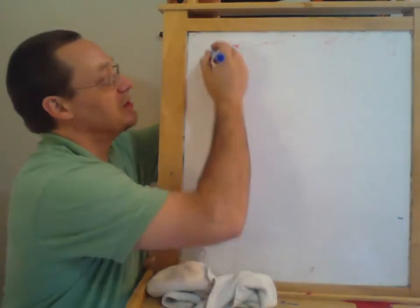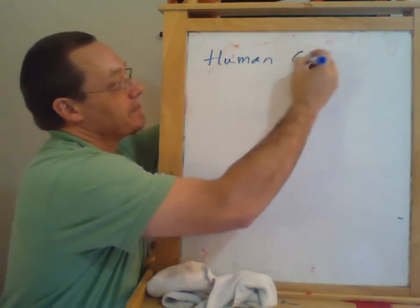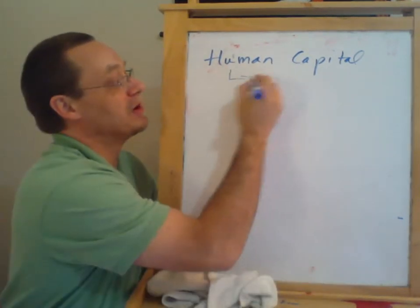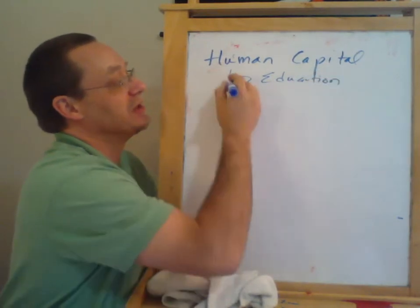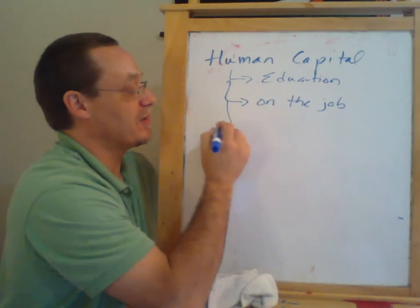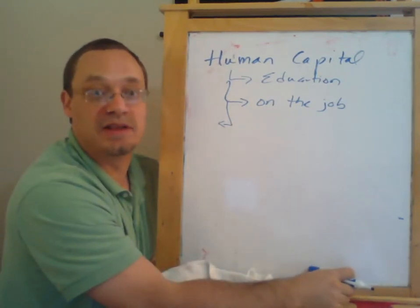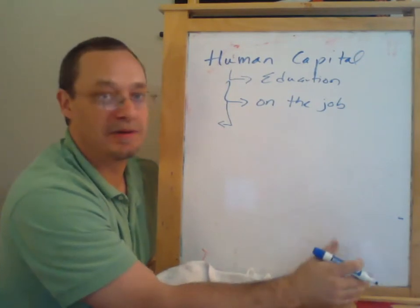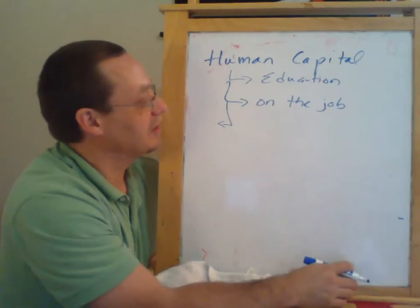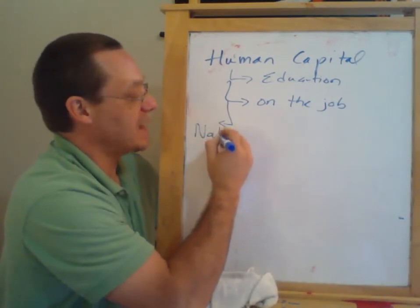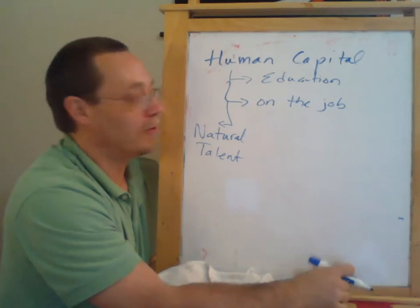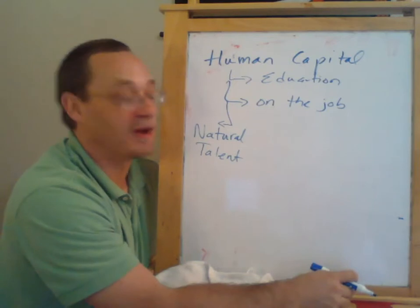We can also look at education and human capital. Certain types of training, formal education, or on-the-job experience increase human capital. Sometimes human capital includes things people are born with — some people are very outgoing and social and will make great salespeople; that's not something they learned in school, just a personality they were born with. Some people have natural athletic or musical abilities, or they're really good with numbers and finance.